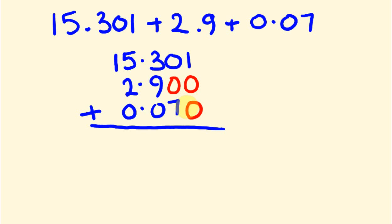Then we can add these together just like a standard sum. We'll start with the thousandths: one plus zero plus zero is one. Zero plus zero plus seven is seven.